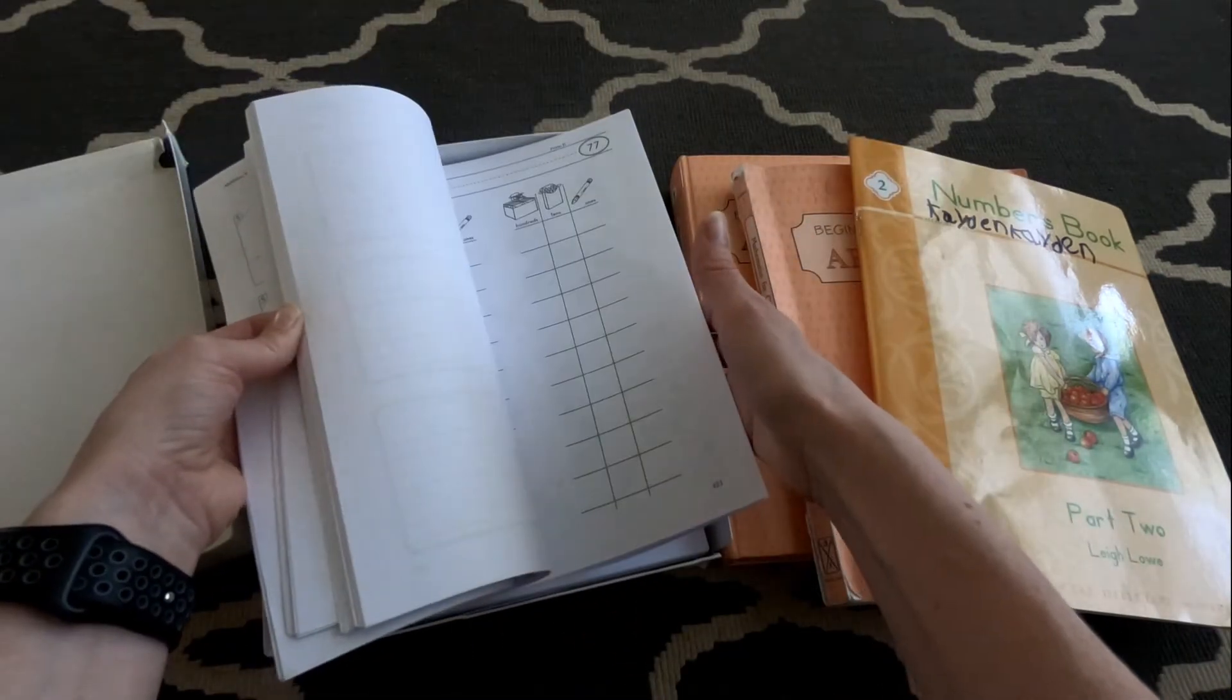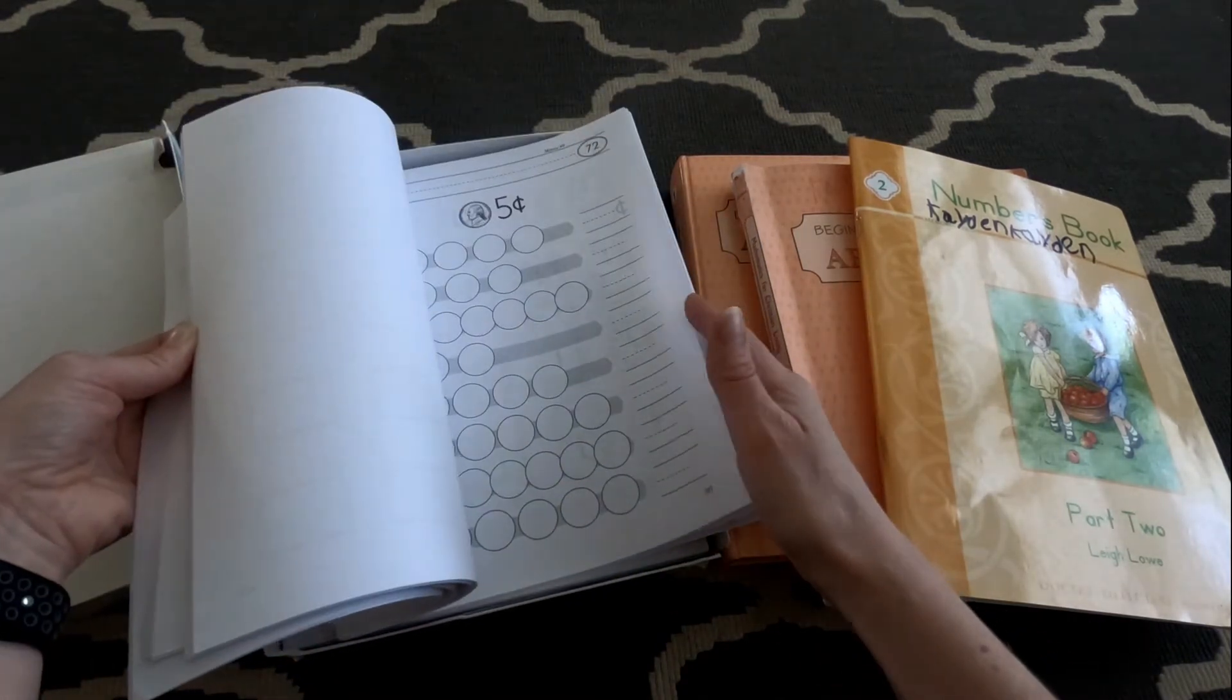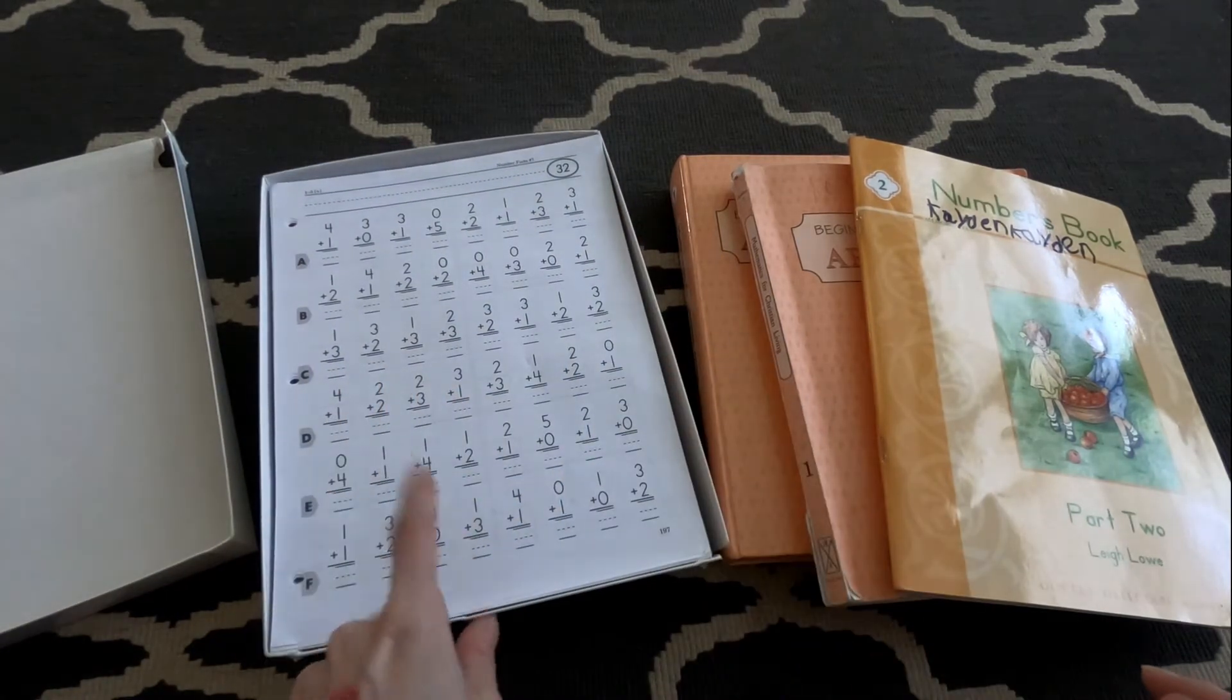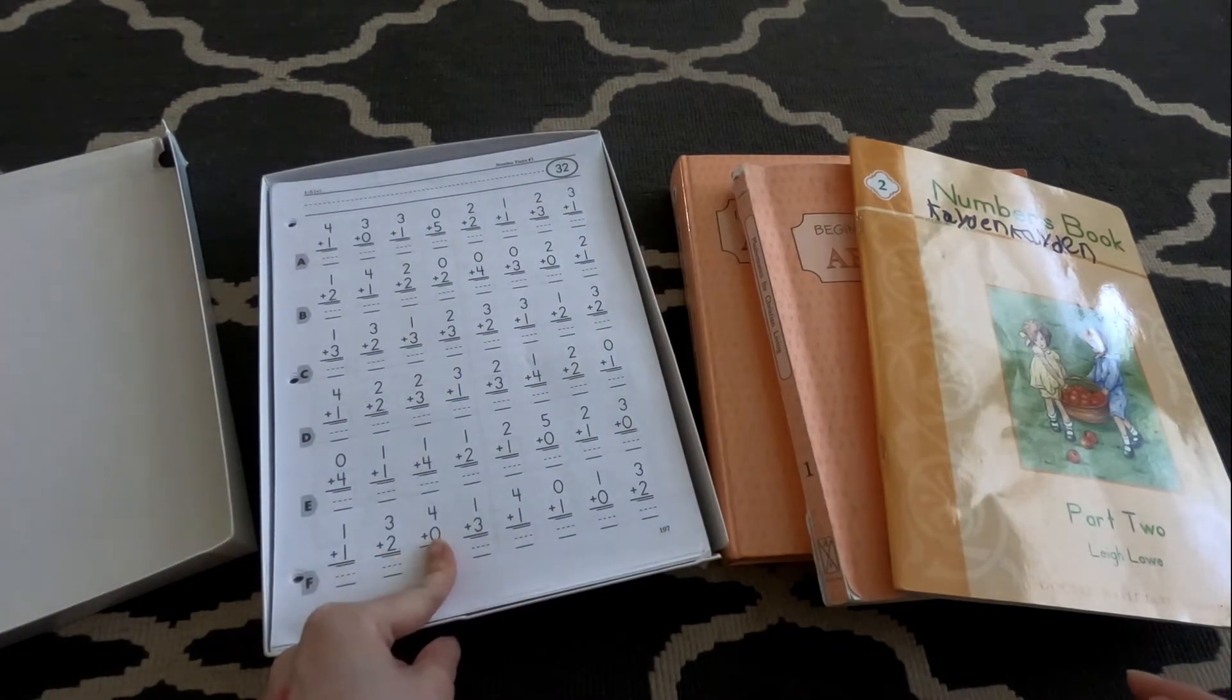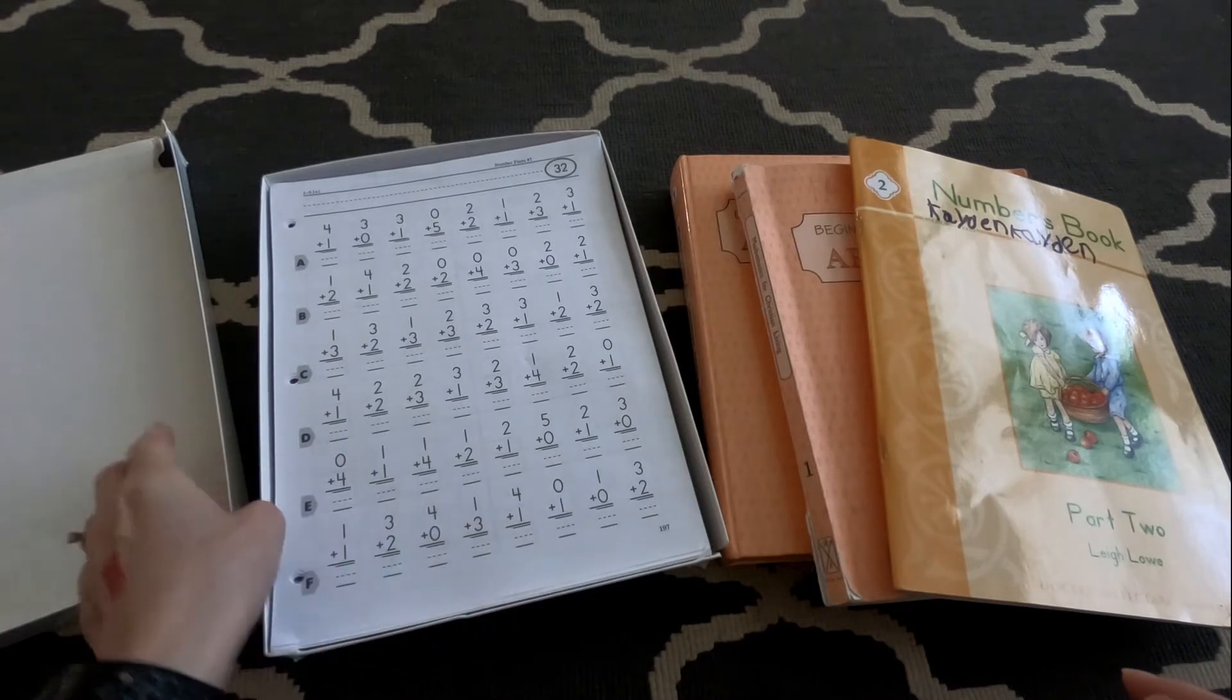I know there's dot to dots in here, counting money, and there's clocks. There's some fun things in here. So I like these to use with kindergarten, but I also pull them out for my kids in other grades if they just need a practice sheet day, or sometimes I'll pull it out for Jackson, my toddler, who just wants to color on one.